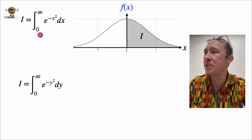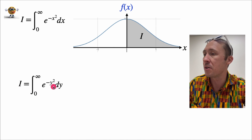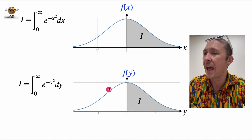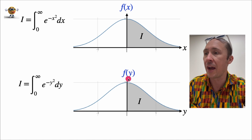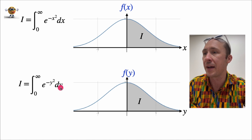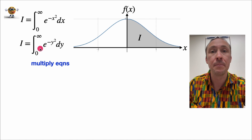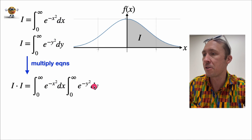Now we're going to define this integral again but using another variable, so now we're going to write the integral in terms of y. Here we have it in terms of x, here we have it in terms of y, and notice that doesn't change anything — we still have the same function we're integrating, but the vertical axis is now written as a function of y. The curve looks the same; you could use any letter you want. Now we're going to take these two integrals and multiply them together, so the left-hand side becomes I times I, and the right-hand side becomes the integral with respect to x times the integral with respect to y.